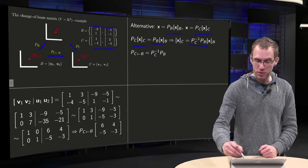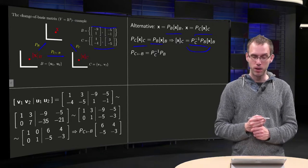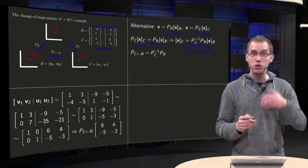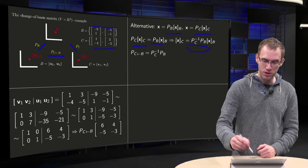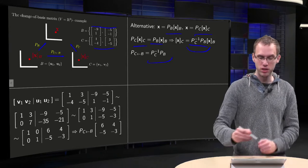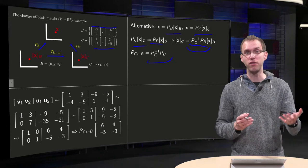So we observe, hey, but this is our matrix P from B to C. So we can also use PB and PC to compute our P from B to C. P from B to C is just PC inverse times PB.